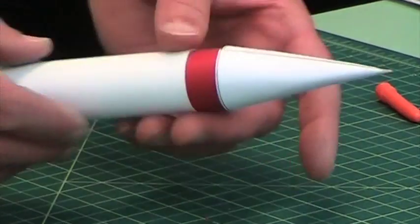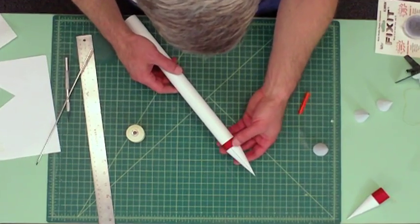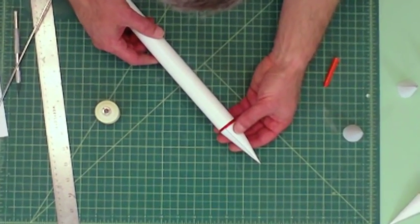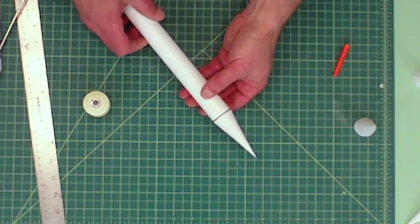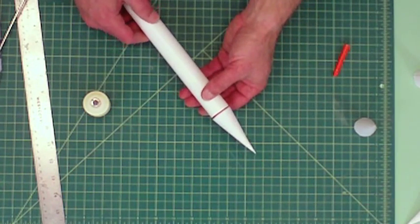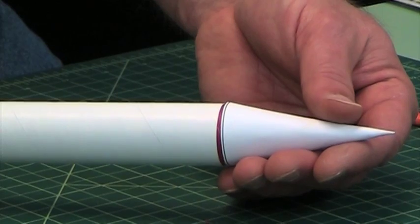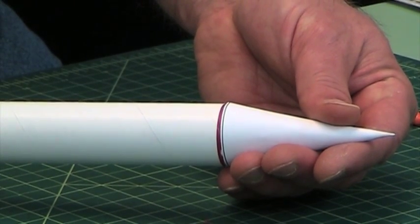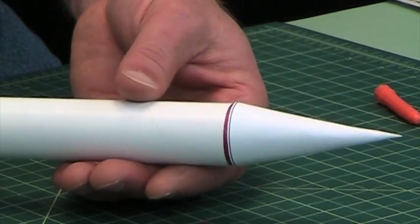It also helps to have a dowel so you can push it out if it gets too far in. And rotate it around because you can see if it's a little bit crooked and you can adjust it.